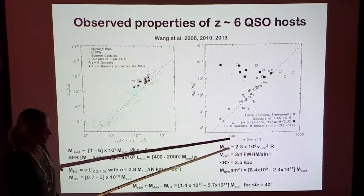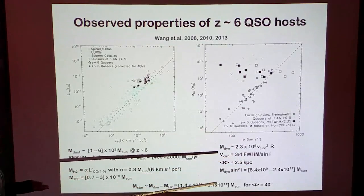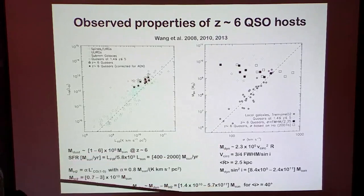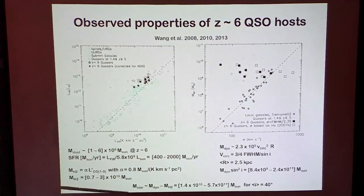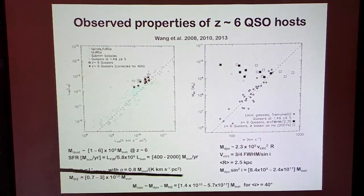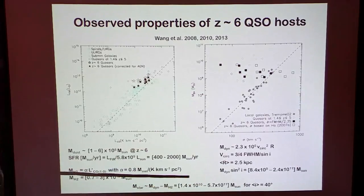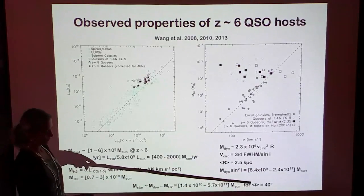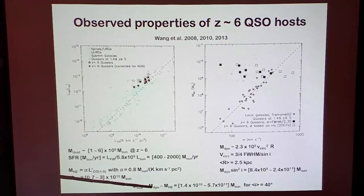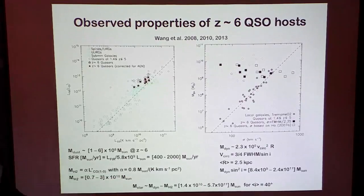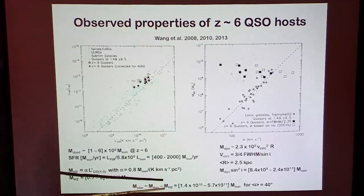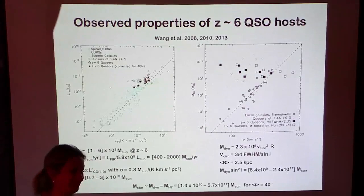From the CO line width you can also derive the dynamical mass, though you have to assume a scale length. The average scale length assumed for these quasar host galaxies is 2.5 kiloparsecs — because for J1148 they could resolve the CO emission and derive this scale length. For an average inclination angle of 40 degrees you get an estimate of the dynamical mass. Subtracting the H2 mass from the dynamical mass, you can estimate the leftover stellar mass, which ranges between 10^10 and a few times 10^11 solar masses — assuming no dark matter.